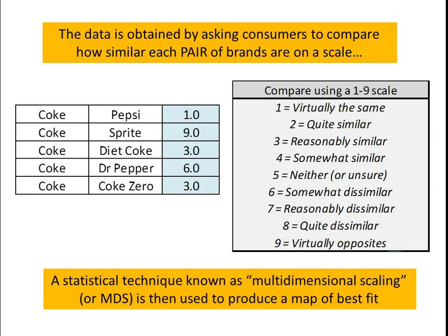As a bit of background, we get the data by asking consumers on a set-by-set basis — so in this case, Coke versus Pepsi: how similar are they? Then we ask them Coke versus Sprite, and so on for every single pair of brands. If we're asking about 10 brands, they compare each of the 10 brands individually on a scale from virtually the same all the way down to virtually opposites. We then use a technique called multi-dimensional scaling, which produces the perceptual map by finding the best fit of the data.